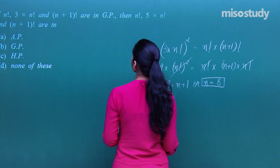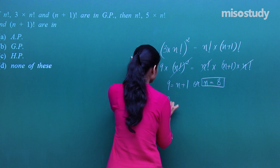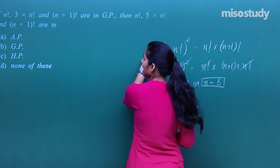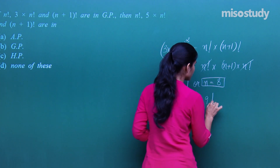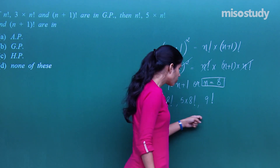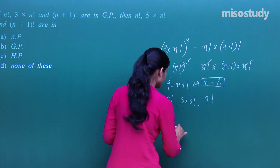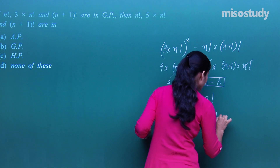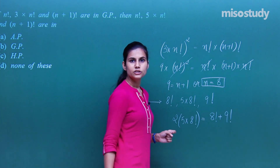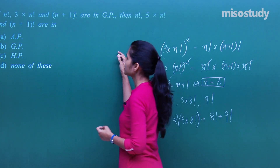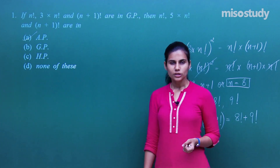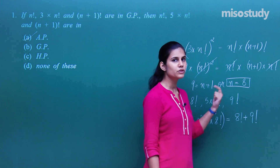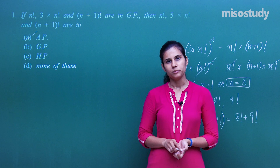The question is now about the status of n! = 8!, 5·n! = 5·8! and (n+1)! = 9!. By inspection, twice of 5·8! equals 8! + 9!, which means these three terms are in arithmetic progression. Once the value of n is known, it is easy to verify that twice the middle term equals the sum of the two extremes.